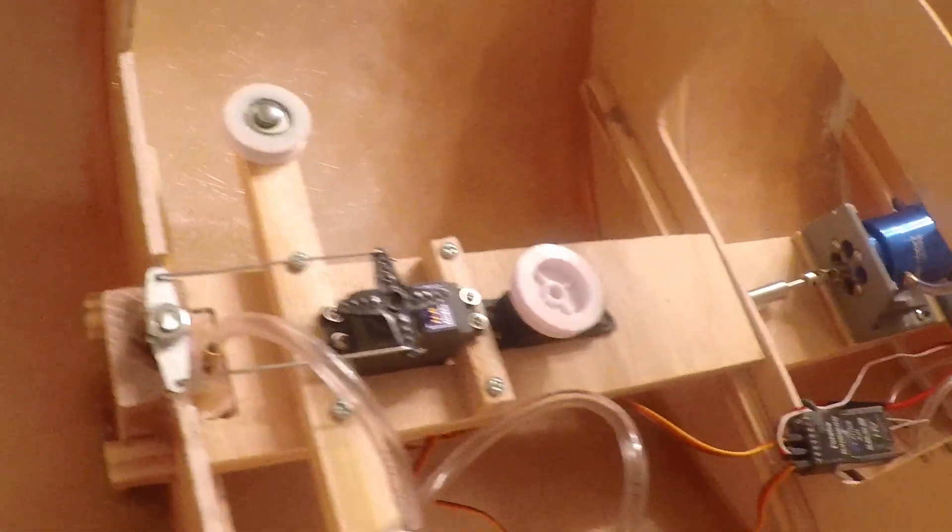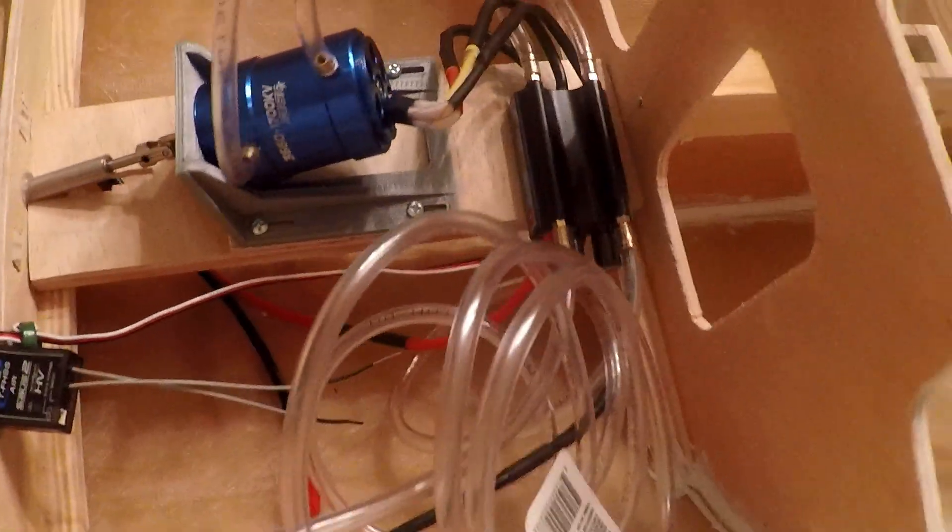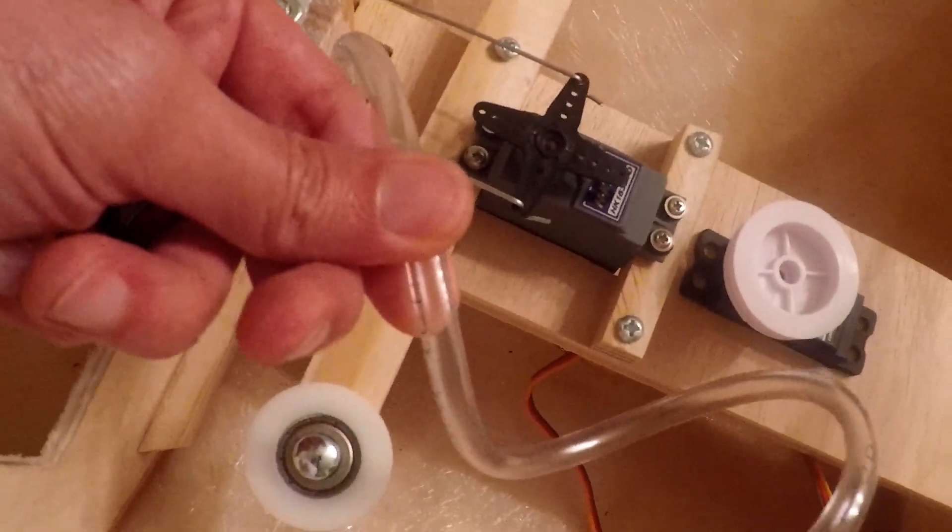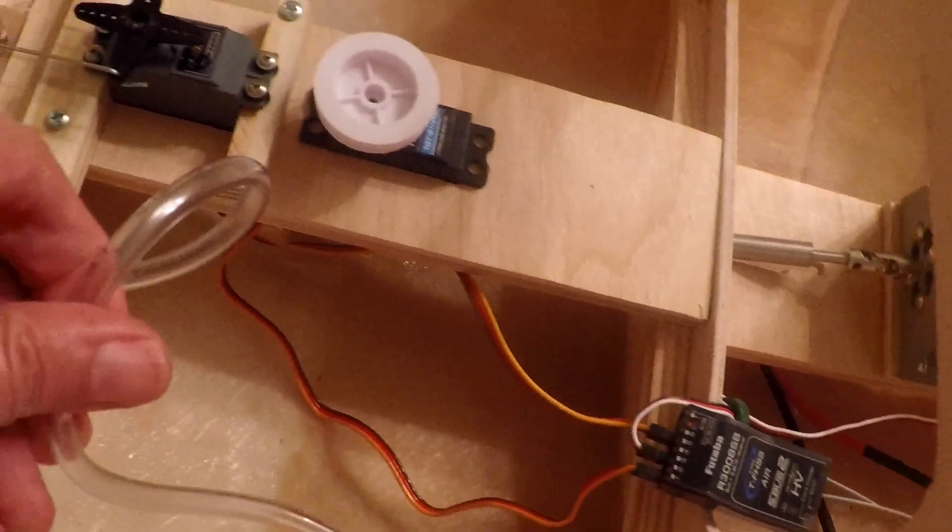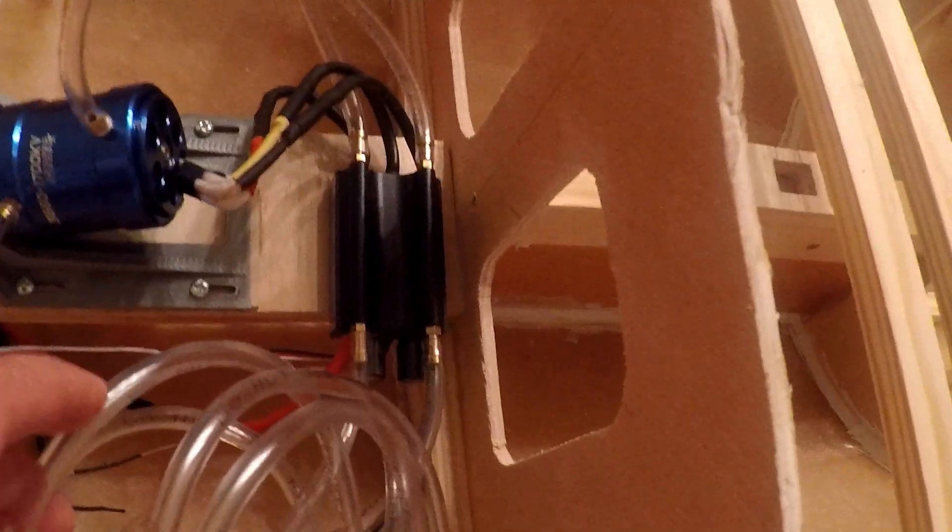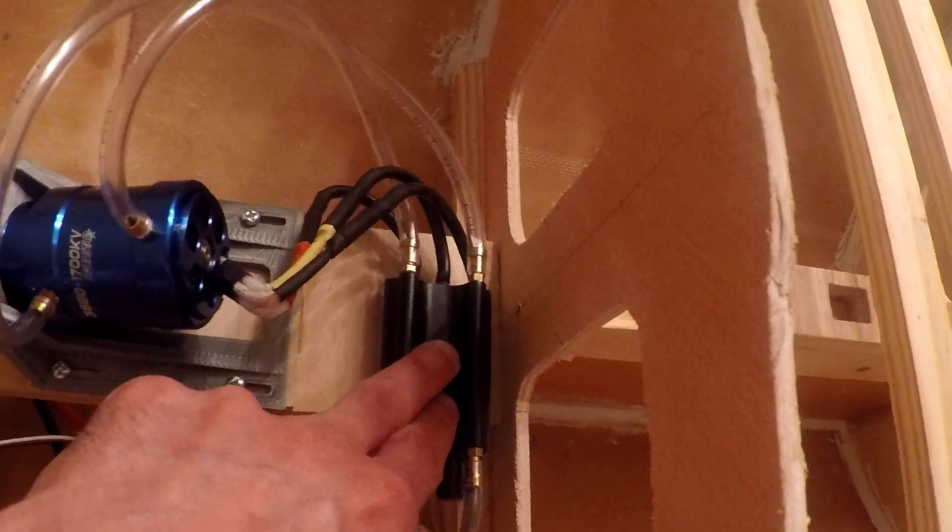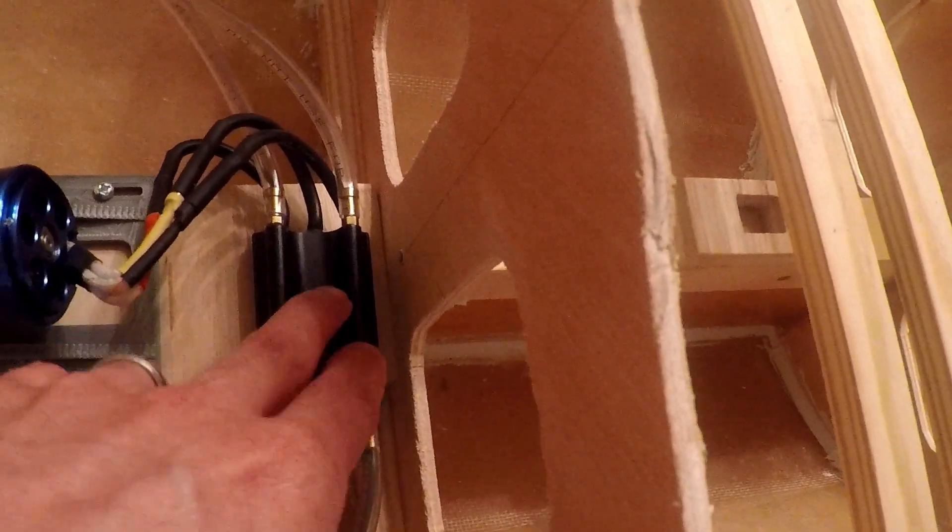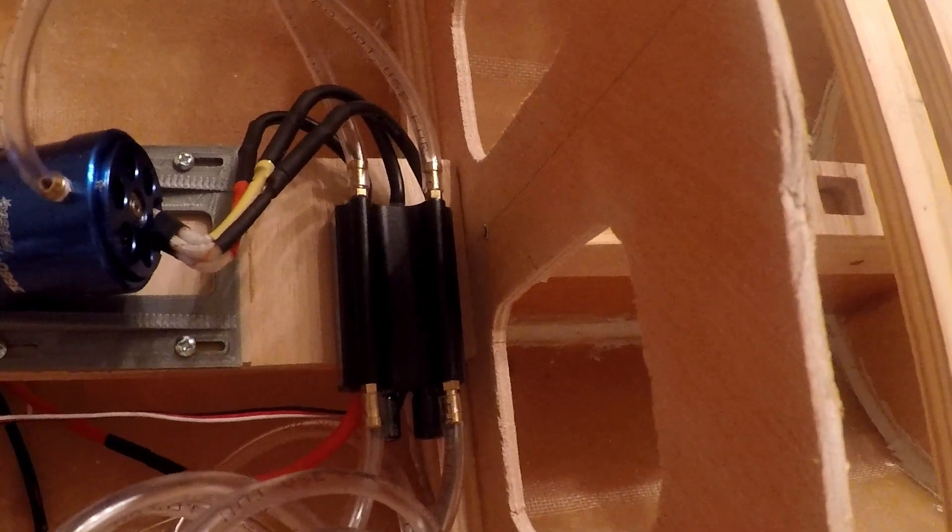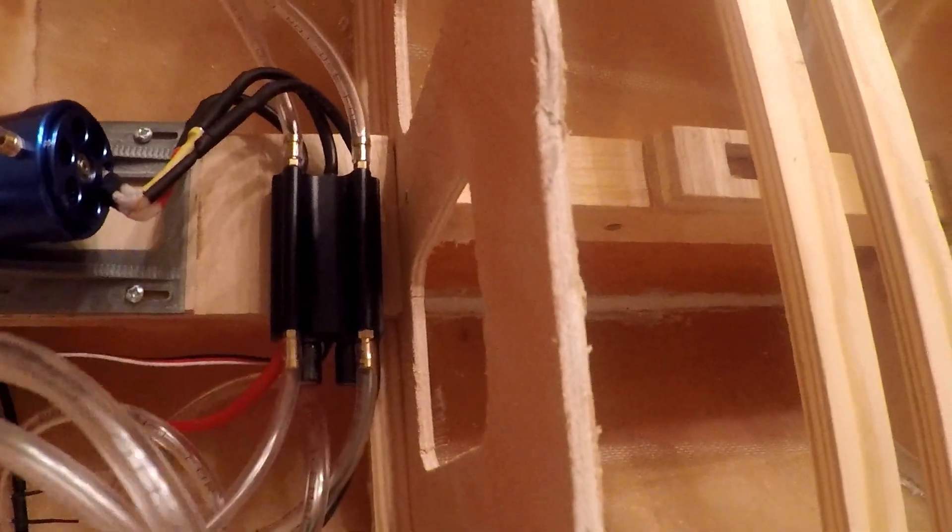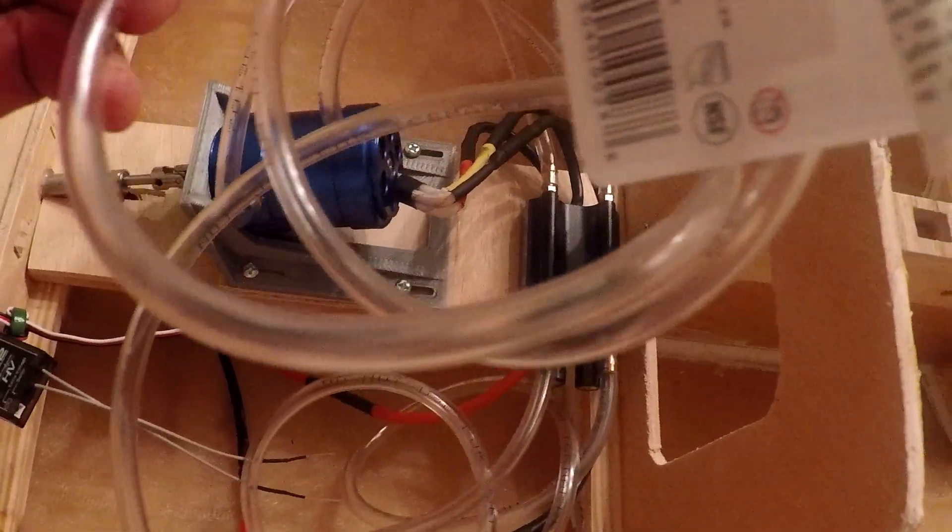Here the water intake hose that takes the water here to the electronic speed controller and then to the motor to cool off those components. And then that water has to exit the system through this part here.